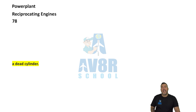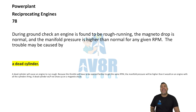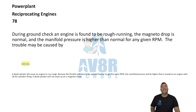Number 78: a dead cylinder. During a ground check, an engine is found to be rough running. The magneto drops are normal, and the manifold pressure is higher than normal for any given RPM. The trouble may be caused by a dead cylinder.